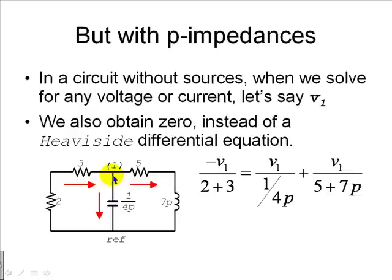If I write KCL equation just like that, the first term is still zero minus V1 over 2 plus 3 equals to the current in the middle branch, V1 over the impedance of the capacitor plus the right-hand side, V1 divided by 5 in series with 7p. If we solve that for V1, we get zero. We don't get a differential equation.